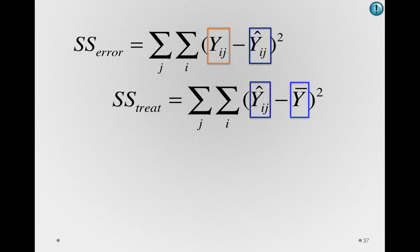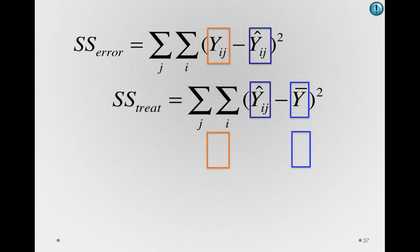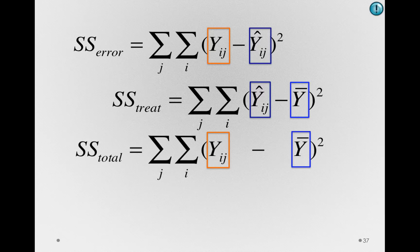Notice that there is a deviation between an individual's actual score — the Y_IJ — and the grand mean, but we're missing that piece. What do we call the deviation between individuals and the grand mean? If we think back to our original definitions of variances, the variance of Y is simply how much individuals deviate from the grand mean. That quantity is the sums of squares total.